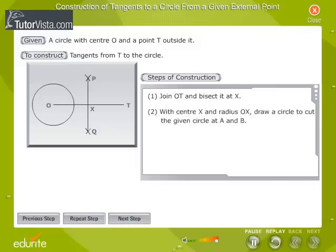With center X and radius OX, draw a circle to cut the given circle at points A and B.